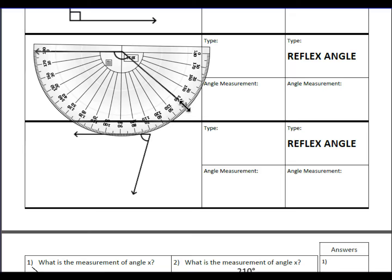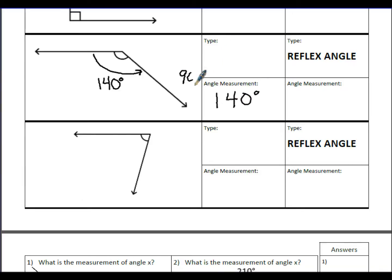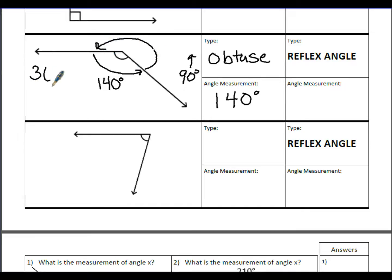Counting from 0 to 140 degrees — this angle measures 140 degrees. Since 140 is greater than 90, this is an obtuse angle. For the reflex angle, 360 minus 140 equals 220 degrees.